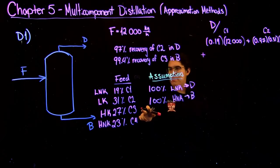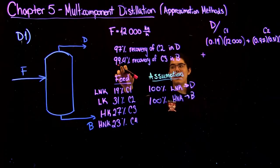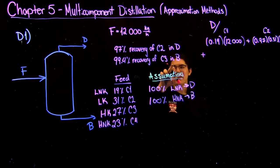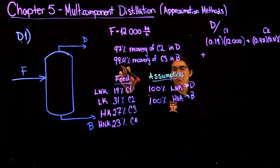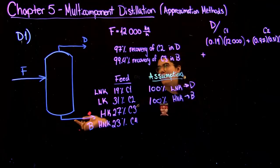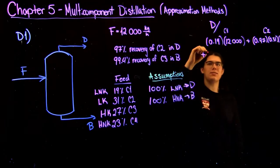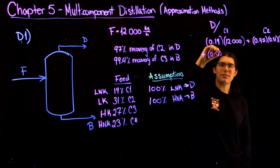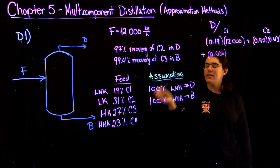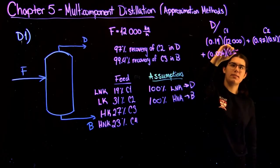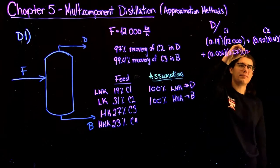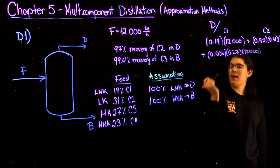Next for C3, we know that 99.4% of it is recovered in the bottoms. So that means 0.6%, because it's not in the bottoms, has to come out of the distillate. So 0.006 times 0.27 times 12,000.